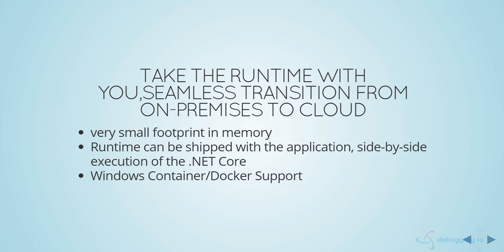With ASP.NET Core, you can take the runtime with you, enabling seamless transition from on-premises to cloud. It has a very small memory footprint, and because the runtime is a NuGet package it can be shipped with the application. It also allows side-by-side execution of .NET Core, meaning three or four different applications can run on different versions of the .NET Core runtime simultaneously without affecting each other — something not possible with older machine-wide .NET Framework installations.